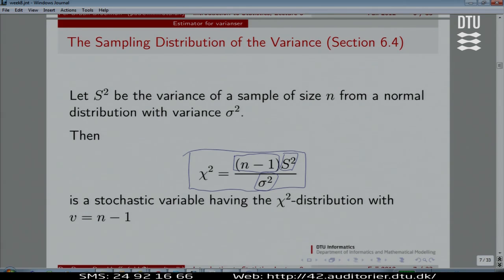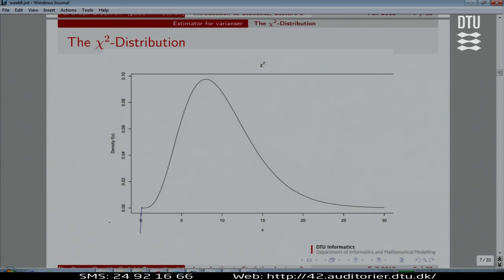Like the t distribution, there is not only one single chi-square distribution. It depends on the number of samples, the number of observations in the sample for which we take the average. We choose the one with n minus 1 degrees of freedom. That is the theory.